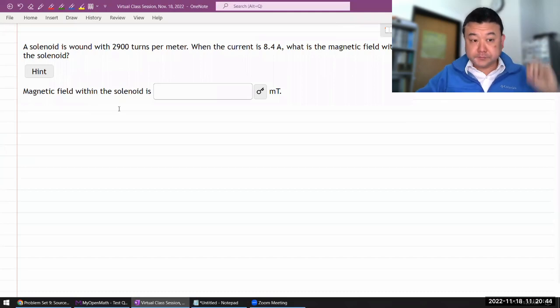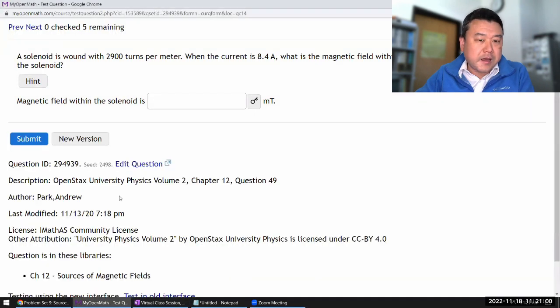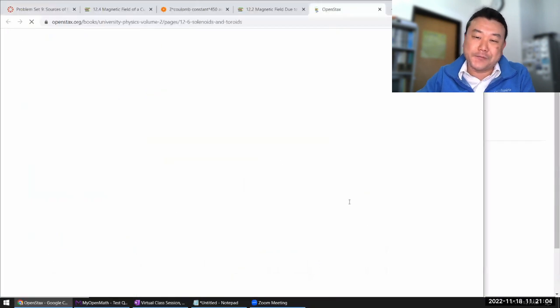Okay, so it says a solenoid is wound with some number of turns per length and it's giving us the current. It's asking for the magnetic field within the solenoid. I think it all makes sense. Now, with this question, like with the other question, you could just look up the formula.